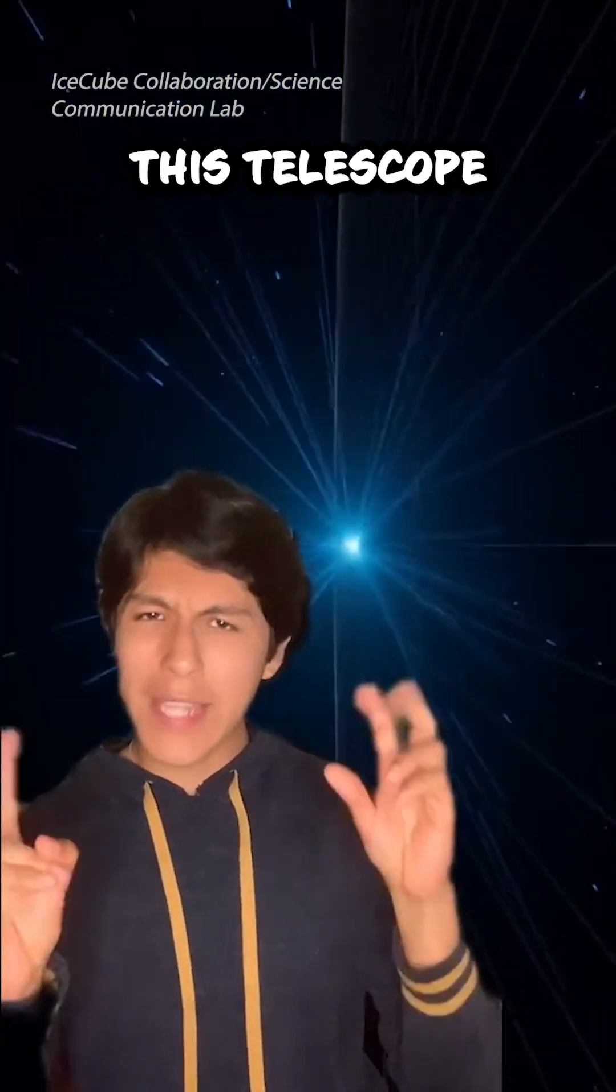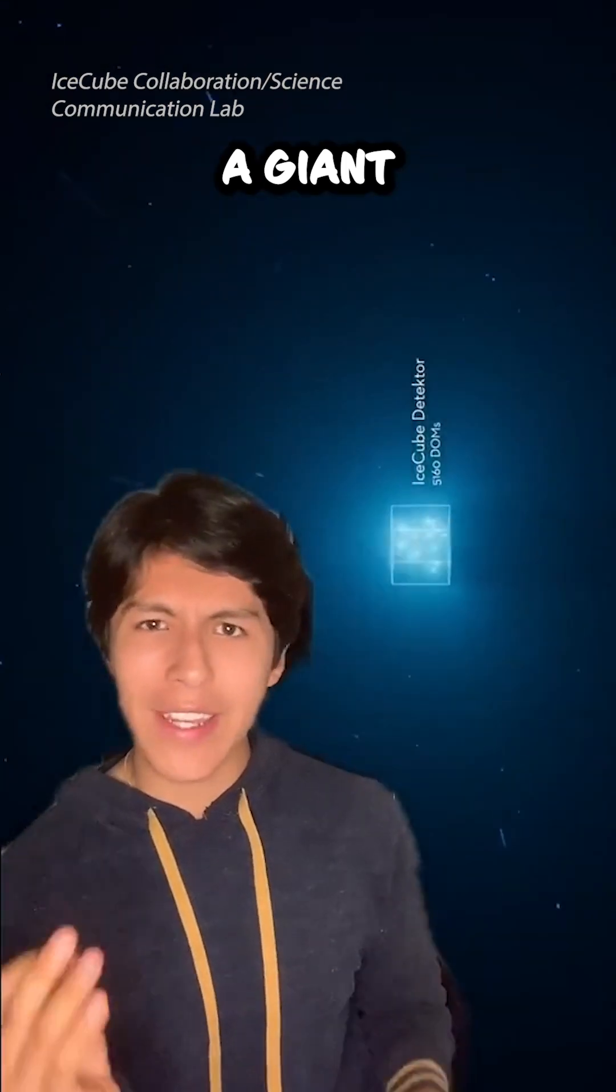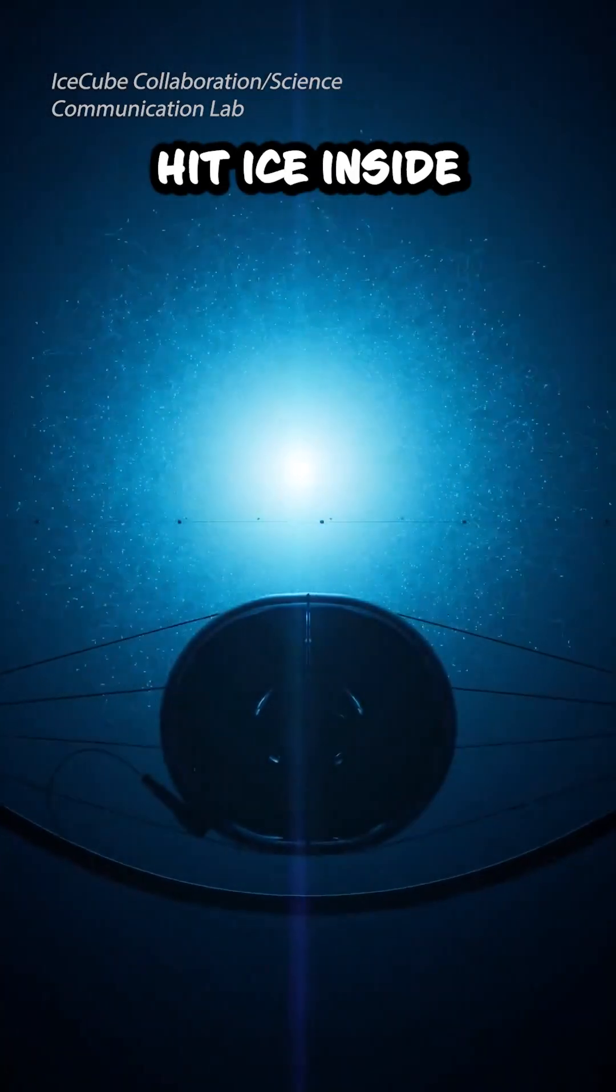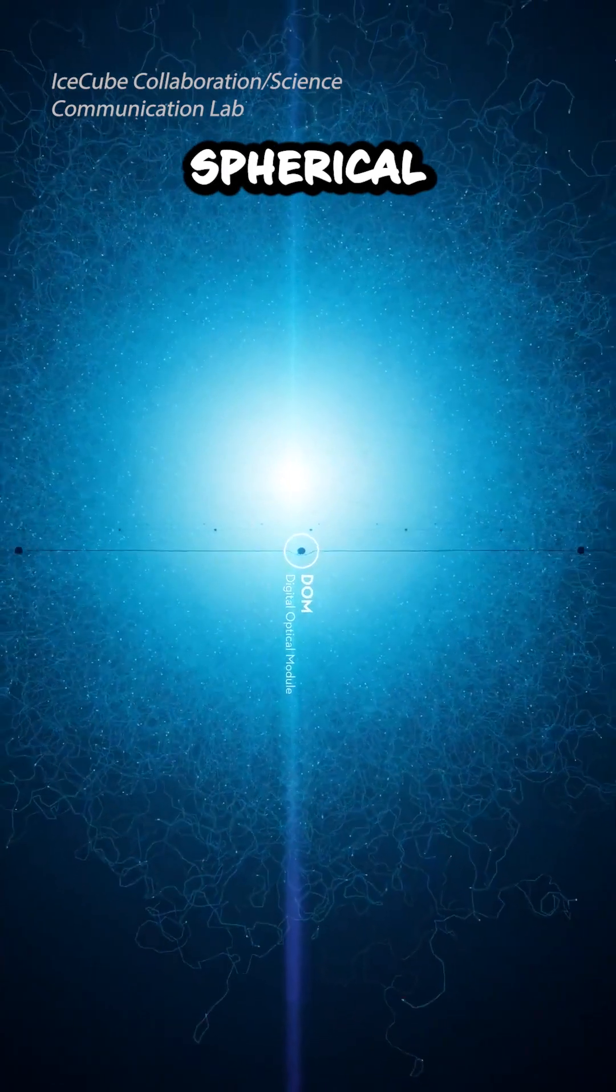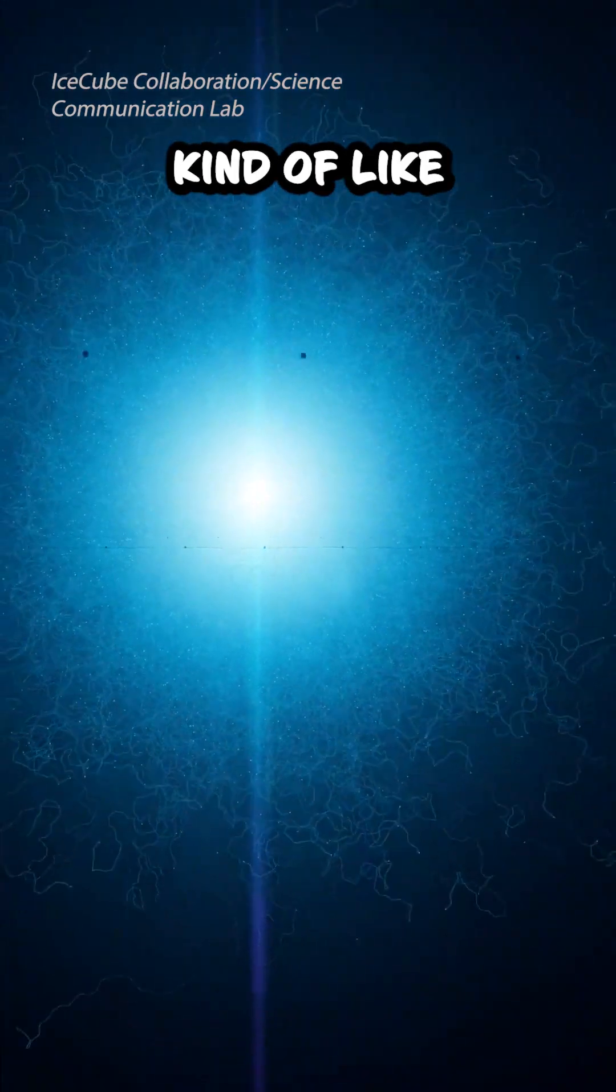What's crazy though is that this telescope is actually a giant ice cube. When neutrinos hit ice inside of this ice cube, they can lose all of their energy and leave spherical imprints in the ice that look kind of like fuzzballs.